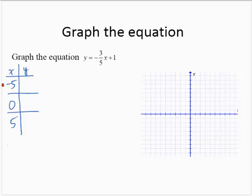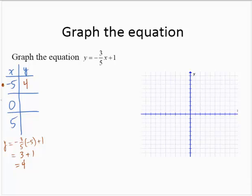If x is negative 5, y would equal negative 3/5 of negative 5 plus 1. That would be positive 3 — a negative times a negative is a positive — and 3 plus 1 is 4. Choosing 0 for x, y would equal negative 3/5 of 0 plus 1, which is 0 plus 1, equals 1.